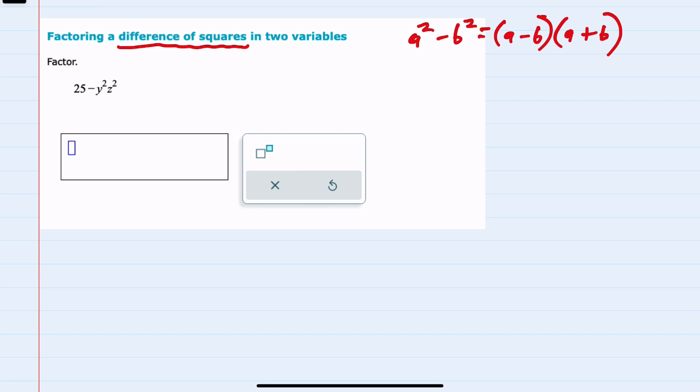Looking at our example here, we have two terms being subtracted. If I could rewrite this as a perfect square minus a perfect square, then I can use this as a shortcut for factoring.